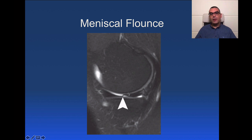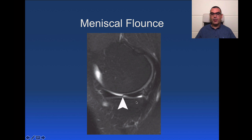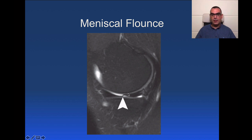Another commonly seen sign is the meniscal fluence sign — a redundant free edge of the meniscal body. This redundant appearance is very normal and is not a tear. It is more commonly seen when the meniscus is at the borderline of a discoid configuration. The bigger the apex of the meniscus, the more redundant it can appear, giving the meniscal fluence sign.